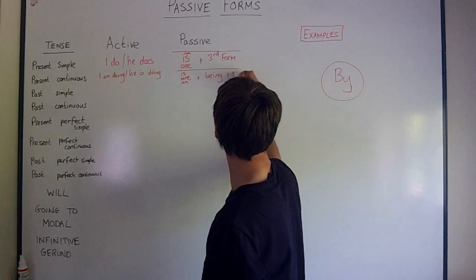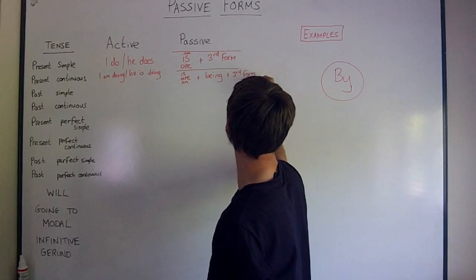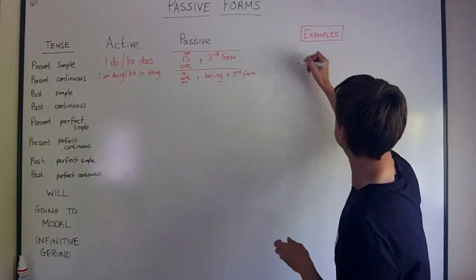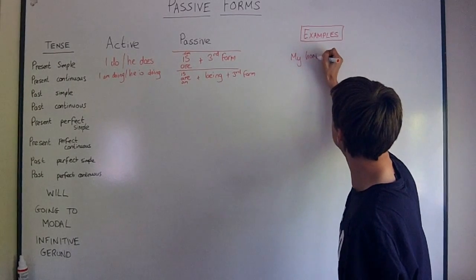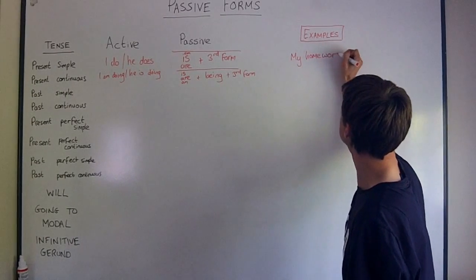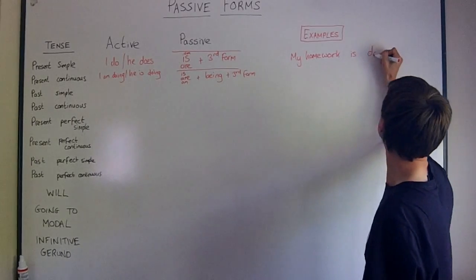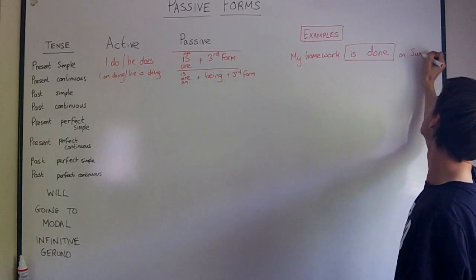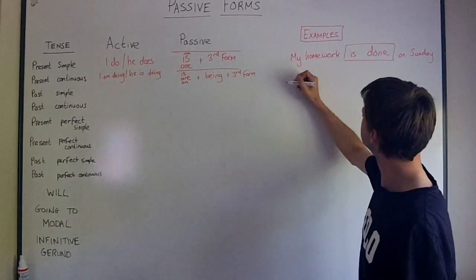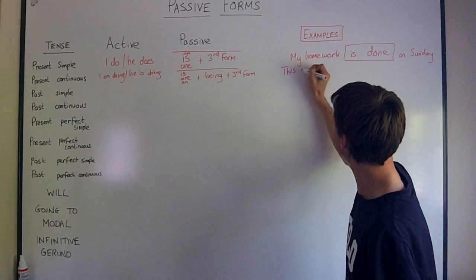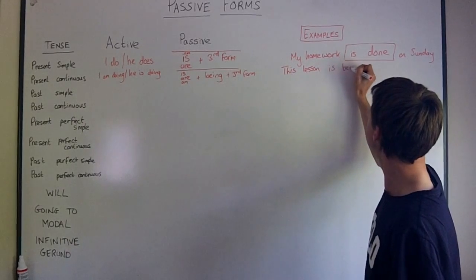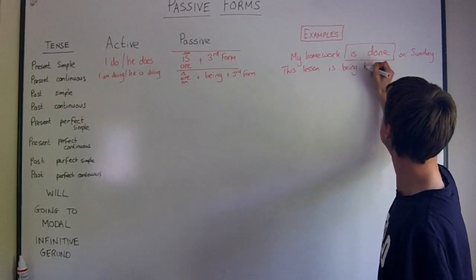Plus being, plus the third form. So let's give you some examples. I didn't write the first one. My homework is done on Sundays. That's present simple. My homework is done every Sunday. And in present continuous, we would say this lesson is being taught by me. This lesson is being taught.